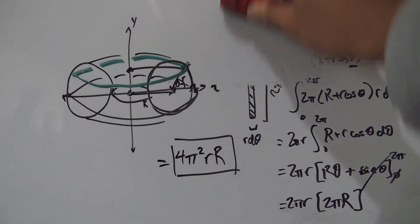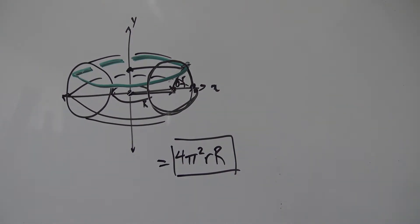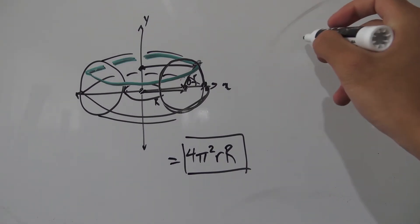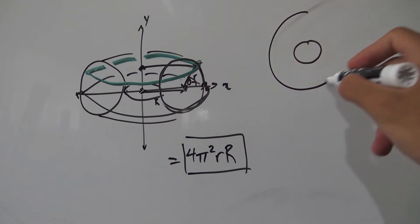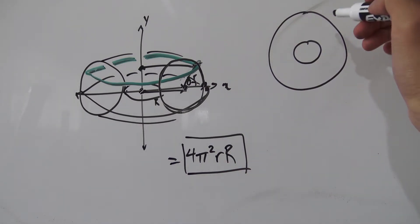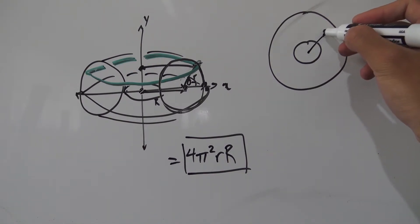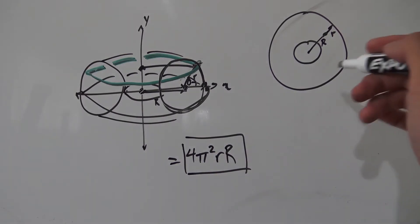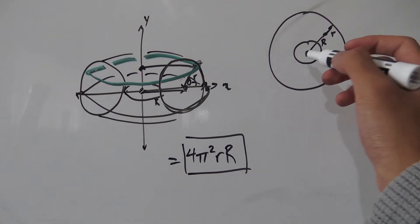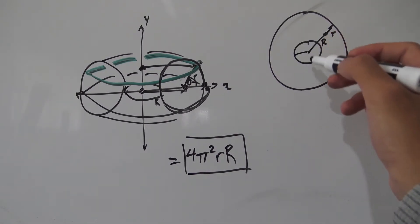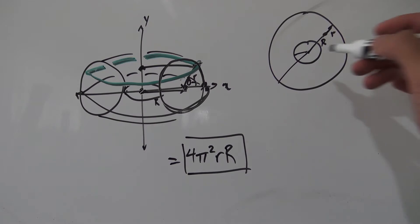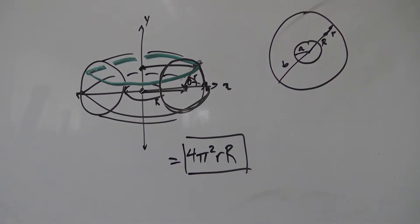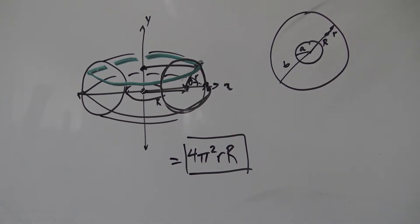Sometimes it's useful to think of the donut in terms of two different parameters. If you look at the donut from a bird's-eye view, our two parameters little r and big R represent the distance to the centre line and the radius of the body. Sometimes it's better instead to use the distance to the smaller inner ring and the distance to the bigger outer ring, calling those distances a and b respectively. To express the surface area formula in terms of a and b, we just need a substitution.